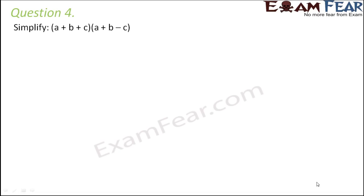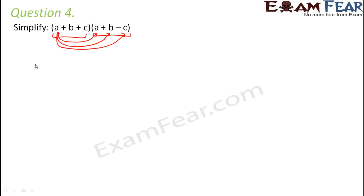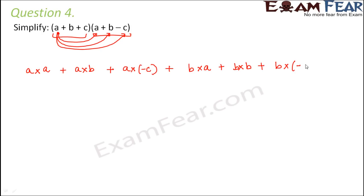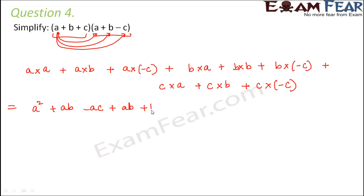Question number 4: Simplify. Here you have a trinomial on this side and a trinomial on the other side, so you need to find the product of two trinomials. Each term of the first trinomial should get multiplied to each term of the second expression. So a gets multiplied to a, b, and minus c; b gets multiplied to a, b, and minus c; and c gets multiplied to a, b, and minus c. This gives: a squared plus ab minus ac plus ab plus b squared minus bc plus ac plus bc minus c squared.